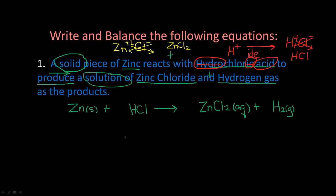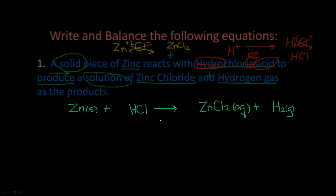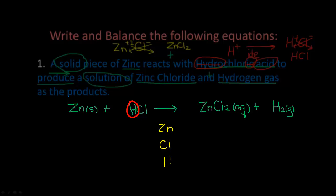Now we need to balance. Remember: we do metals first. Zinc is a metal, so I put it down here. Next step is polyatomics — we have none here, so we go to non-metals. Our next non-metal is Cl. Then we do hydrogens and oxygens last. Let's balance metals: we have one zinc on the reactant side and one zinc on the product side — zincs are already balanced. Now let's do our Cl's: on the reactant side we have one Cl, and on the product side we have two Cl's (ZnCl₂).